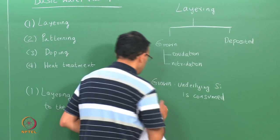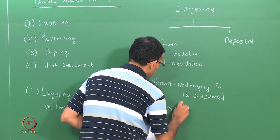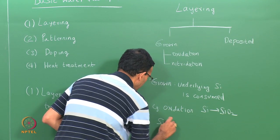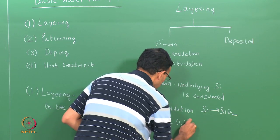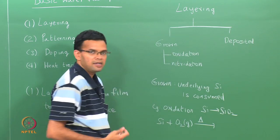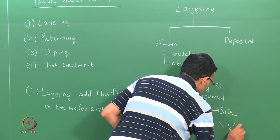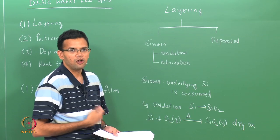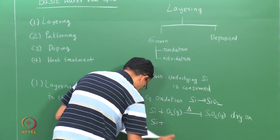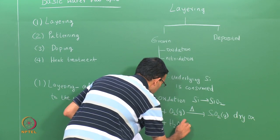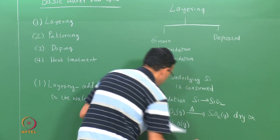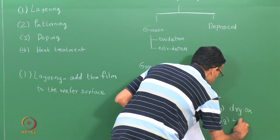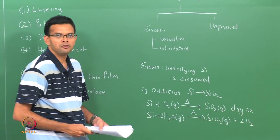An example of a grown film is oxidation, in which case you are forming an oxide layer by consuming the silicon. You also have nitridation, where instead of an oxide layer you form a nitride layer. In oxidation, your silicon forms SiO₂. The simplest way to form this is by reacting silicon with oxygen gas at high temperature — this is called dry oxidation. Instead of oxygen, you can also use water or steam: Si + 2H₂O (gas) at high temperature gives SiO₂ + 2H₂. Where you use water, this is called wet oxidation.